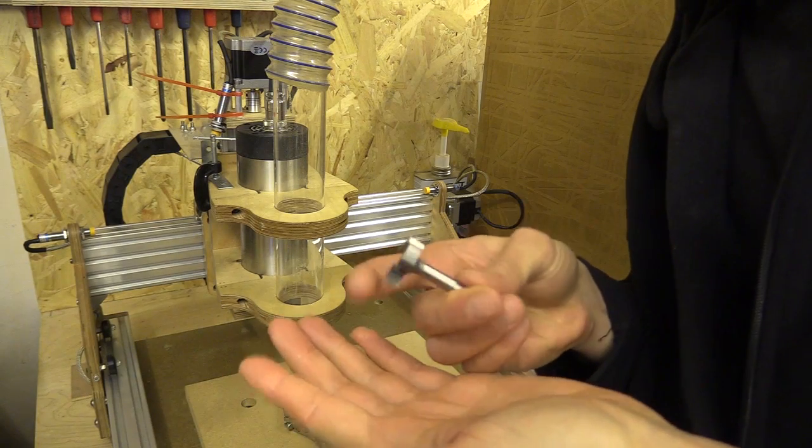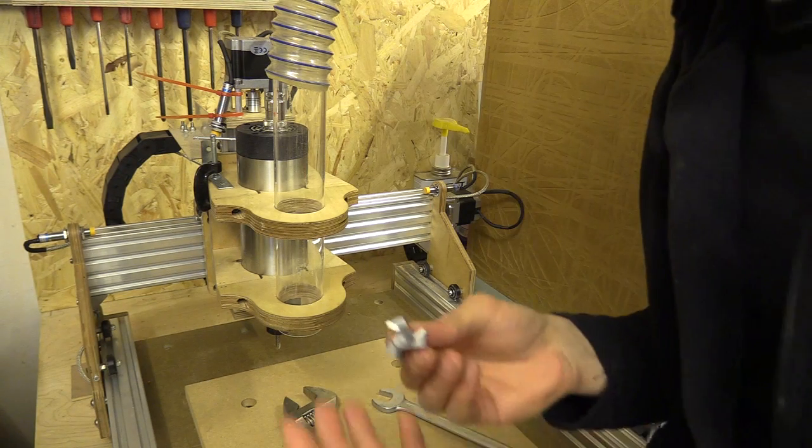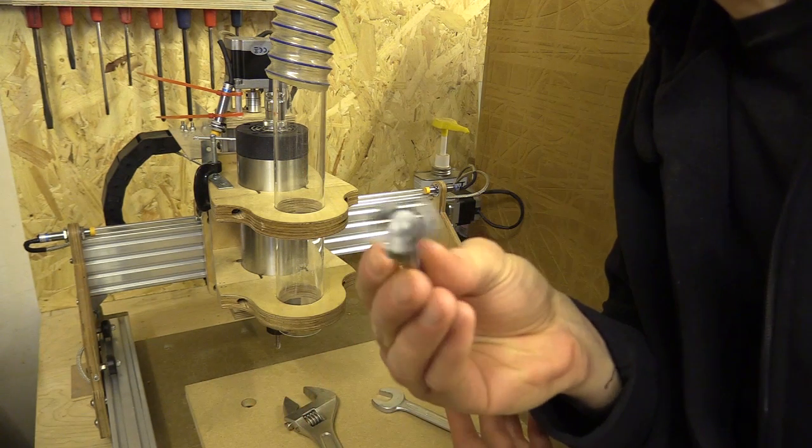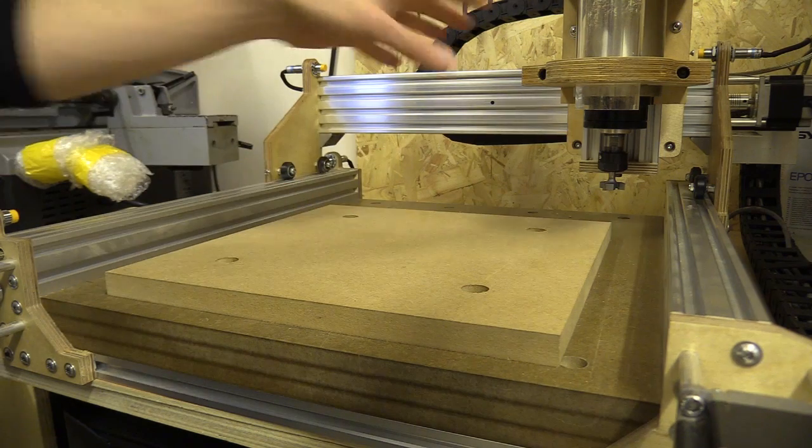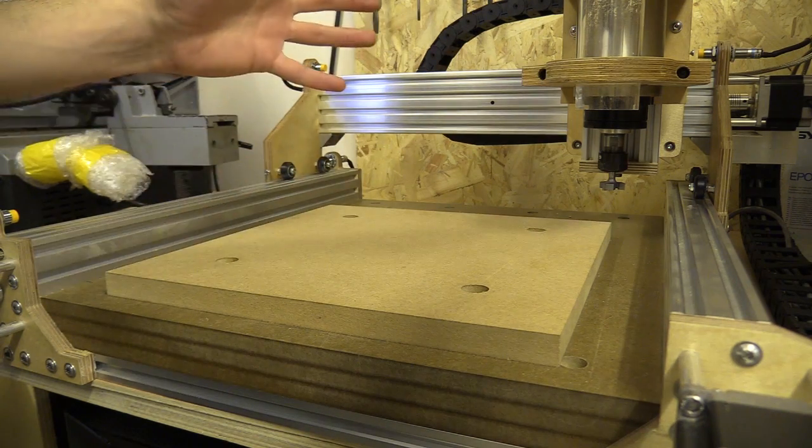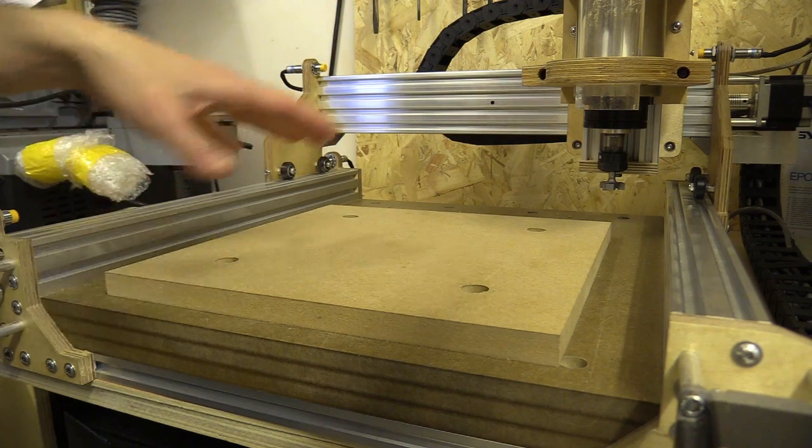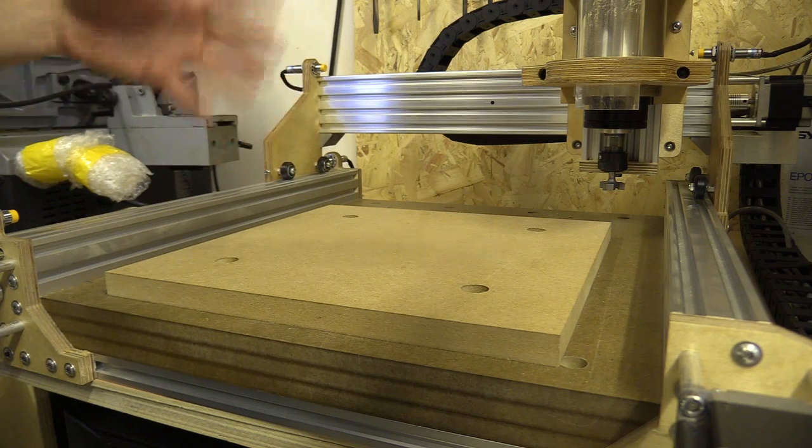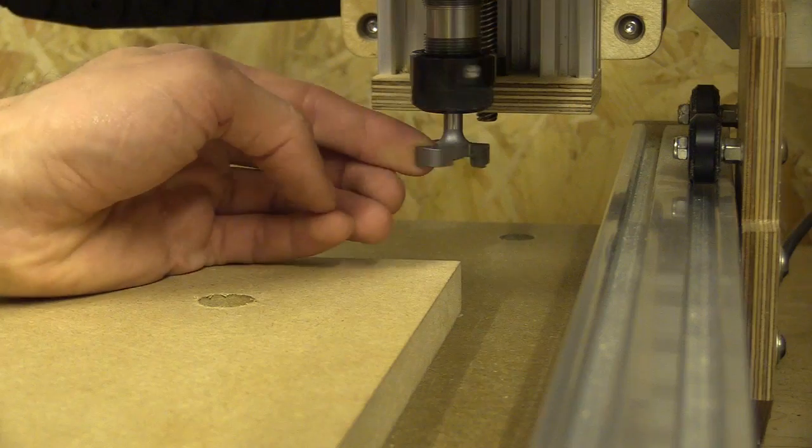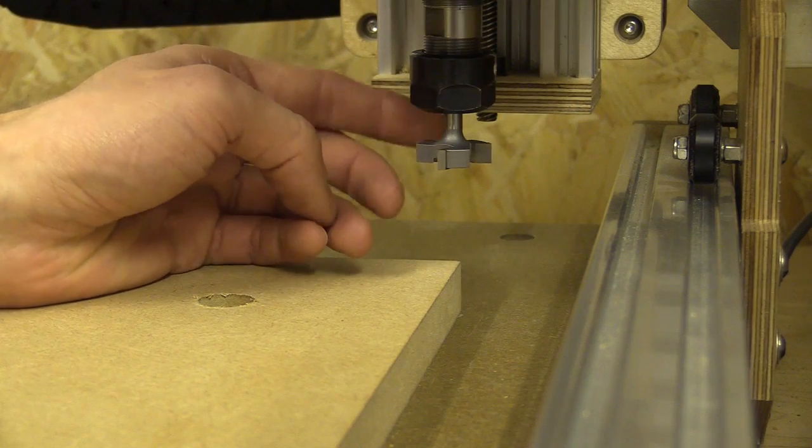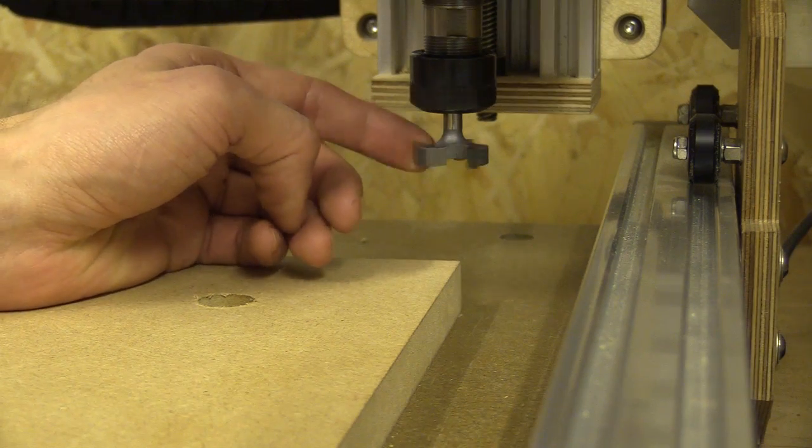I'm going to surface the spoilboard and then use this bit here. Looks a bit Klingon. The important thing about doing this is to make sure that the CNC machine is in the position that you want to use it for the foreseeable future so I'm happy with the alignment of the spindle, how that's clamped in place, how everything seems to be travelling.